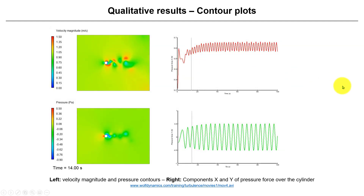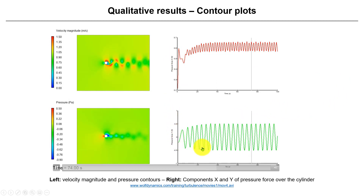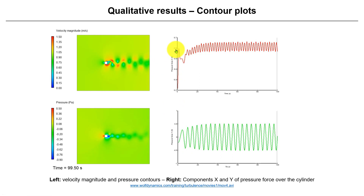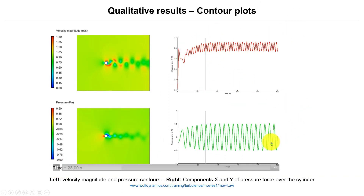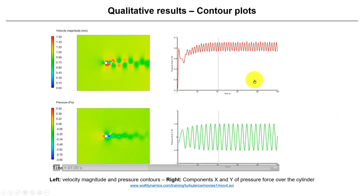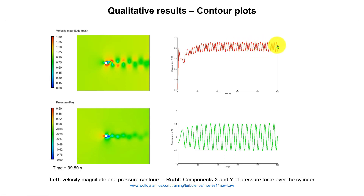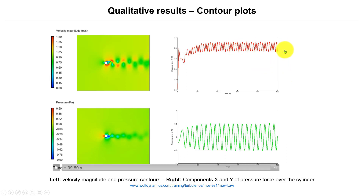In this case we have the pressure force in the X and Y directions. Remember the force can be divided into a pressure component and a viscous component — here we're looking just at the pressure component, and you can see different behaviors with a characteristic shedding frequency. There is an initial transient, so you cannot stop the simulation early because it's not yet statistically steady. Let it run to about 40 or 50 seconds, and from that point everything is repeating — it's statistically steady.